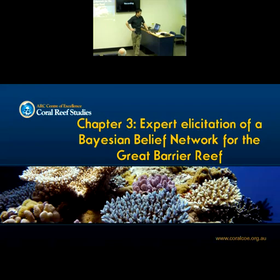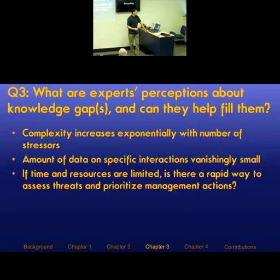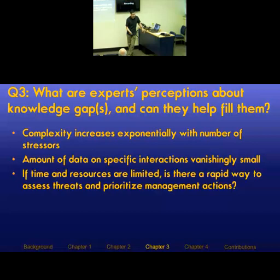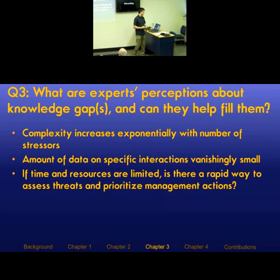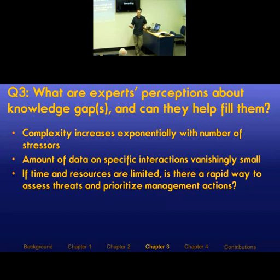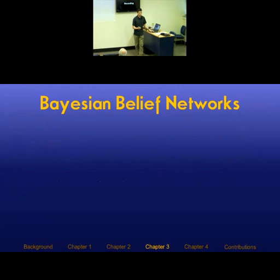Given all the knowledge gaps elucidated through chapter one, is there an alternative to just looking at data? Hopefully there is: expert elicitation. The complexity of multiple stressors increases exponentially with the number of stressors — the number of interactions beyond two becomes hopelessly complicated. So the amount of data on any specific interaction will be substantially small for any response or stressor pair. If time and resources are limited, is there a rapid way to assess threats quantitatively and prioritize management actions?